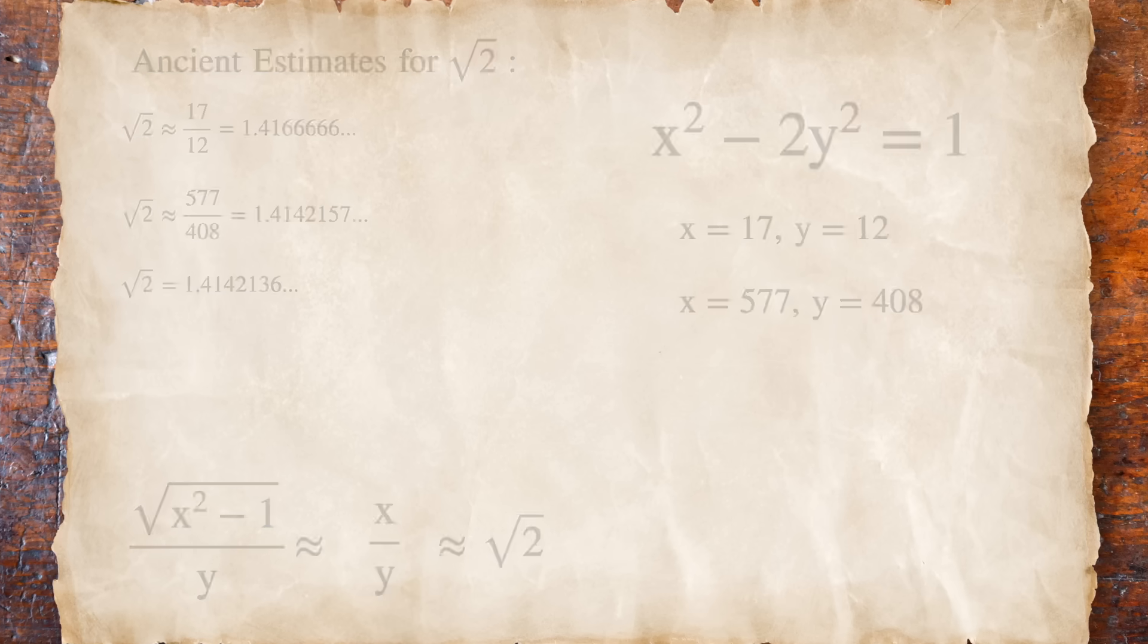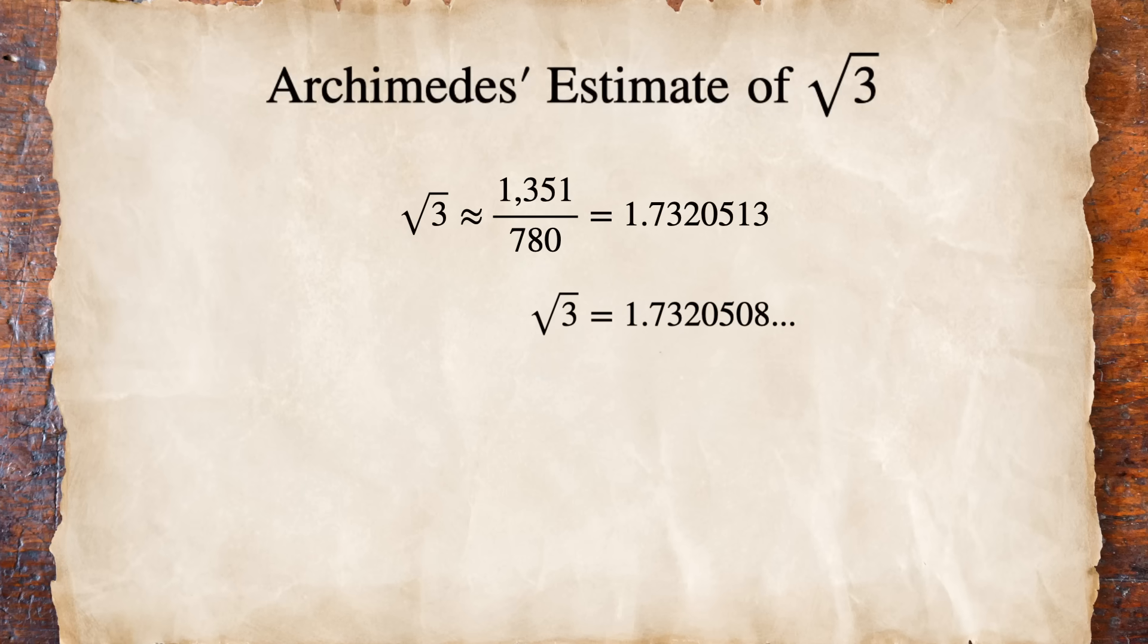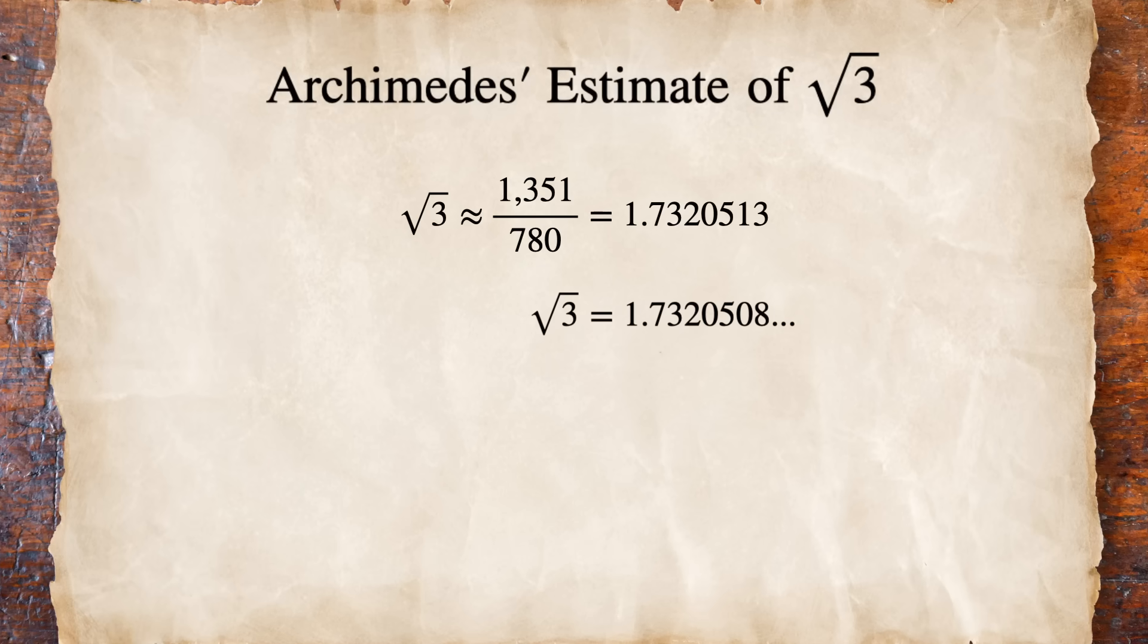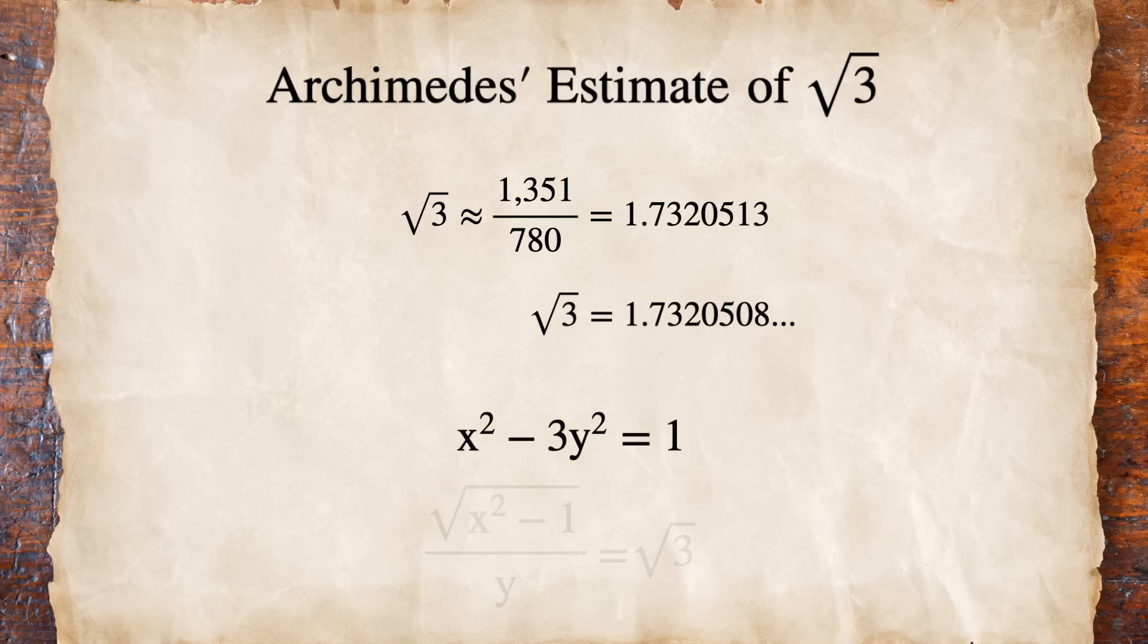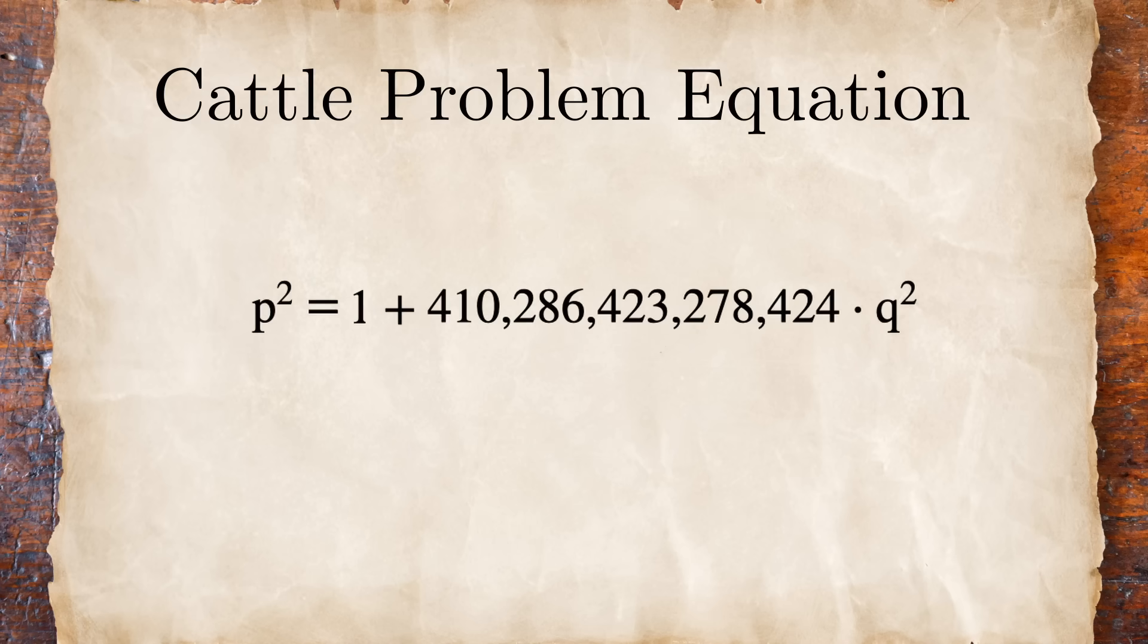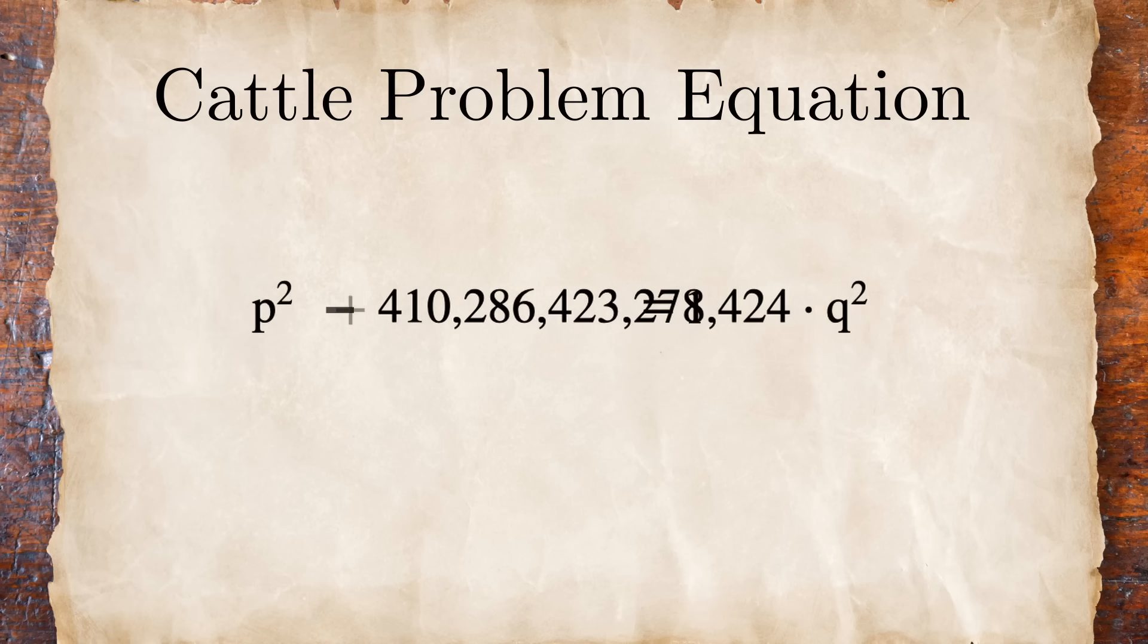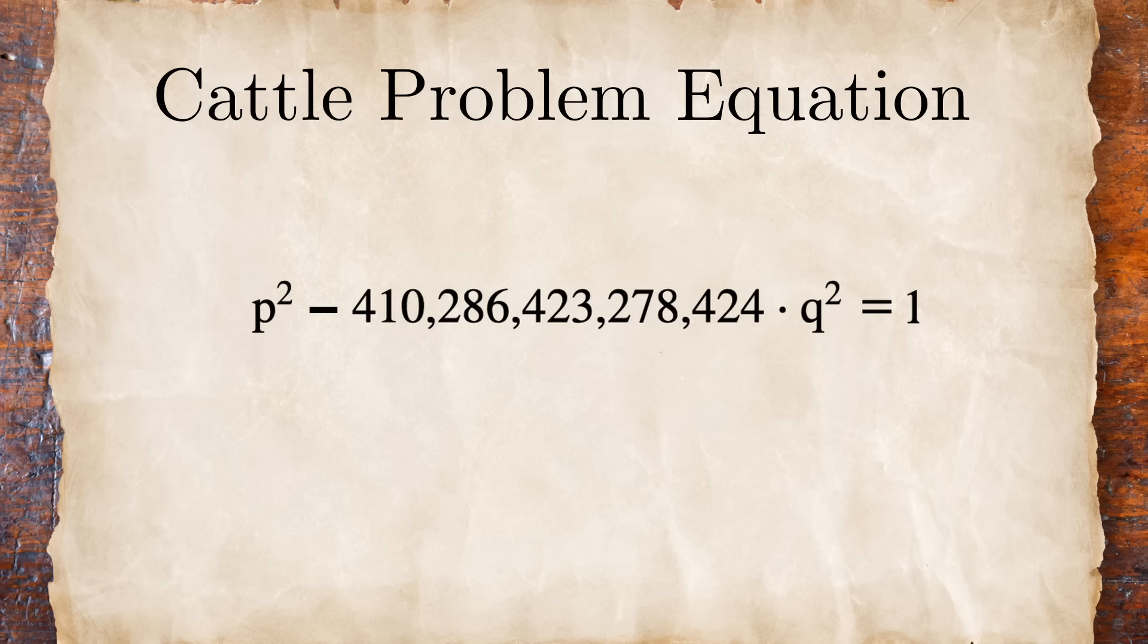Meanwhile, Archimedes himself found an impressively accurate estimate for the square root of 3. While nobody knows for sure how he found it, it seems likely that he used a similar strategy. It goes without saying that the Pell equation for this cattle problem is significantly more complicated. While some think that Archimedes could have understood the setup and maybe recognized that this cattle problem did have an actual whole number solution, it would have been impossible for him to have found the full value.